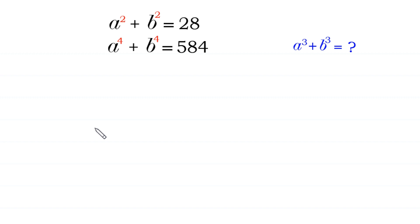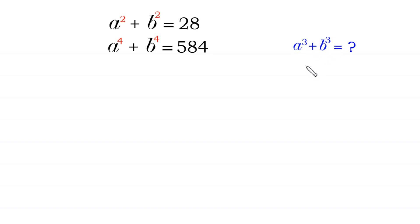Hello, welcome to how to solve this very nice system of equations. We have a² + b² = 28 and a⁴ + b⁴ = 584. We need to find the value of a³ + b³, where a > 0 and b > 0.